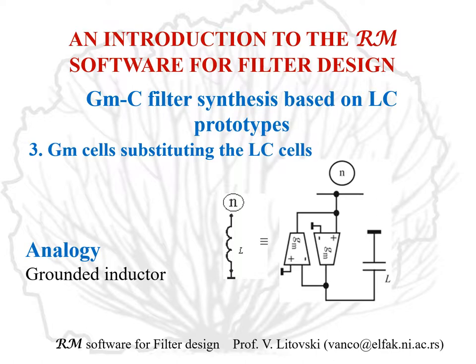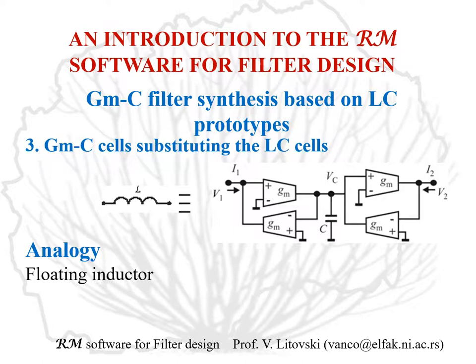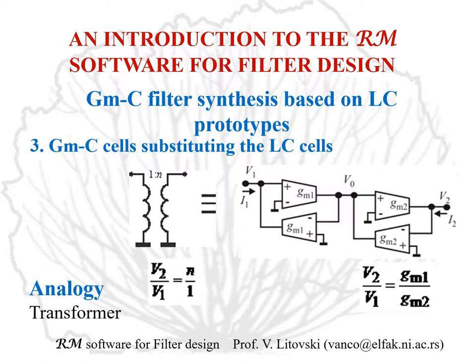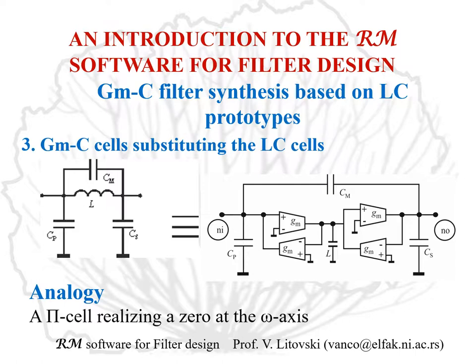Based on this fundamental idea, one may produce a complete solution of GMC filters. The first analogy: the grounded inductor is substituted by this circuit on the right-hand side. The floating inductor is substituted by this circuit — here, four transconductance amplifiers are needed. The transformer is realized with the same circuit but without the capacitor. Here is the pi cell, which realizes a zero at the omega axis in the LC synthesis, and here the inductor is substituted, giving again a pi cell.